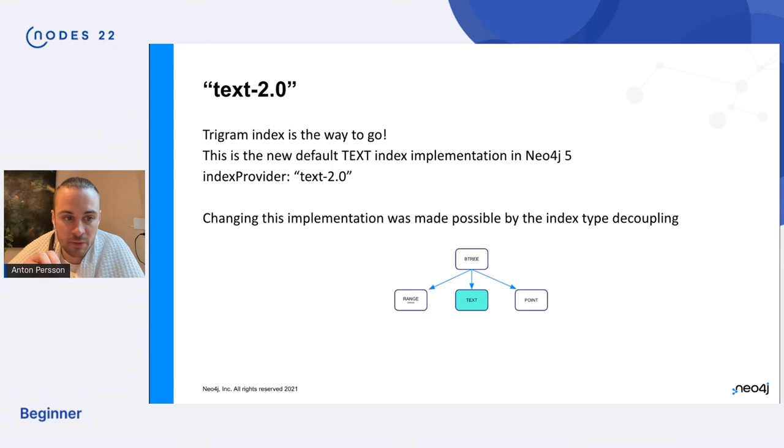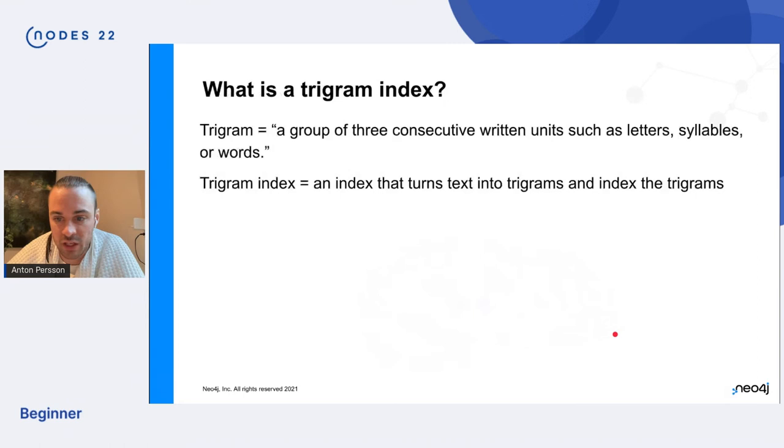And this iteration to re-implement the backend, so to speak of the type is made possible by this decoupling of the index type. So what is a trigram index? Well, a trigram is a group of three consecutive written units such as letters, syllables, or words. So three letters basically.